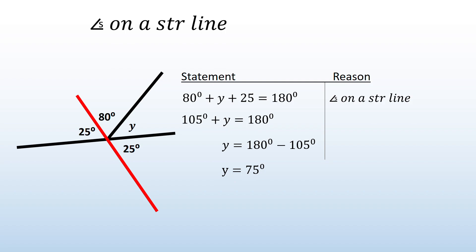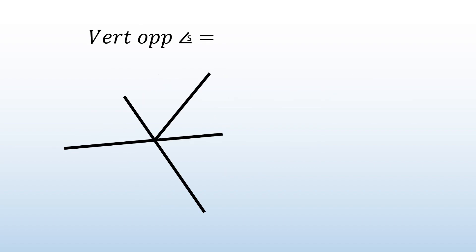And then reason three is vertically opposite angles. So vertically opposite angles, you're working with an x. The opposite angles are equal to each other. So in this case here, those two will be equal to each other. And if I take that black line away, those two will be equal to each other. So let's do an example on this.